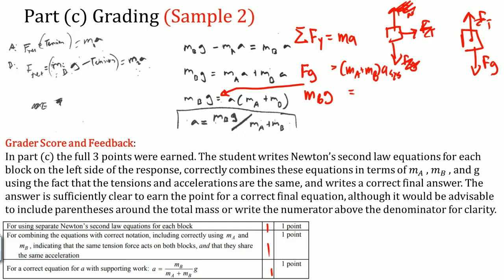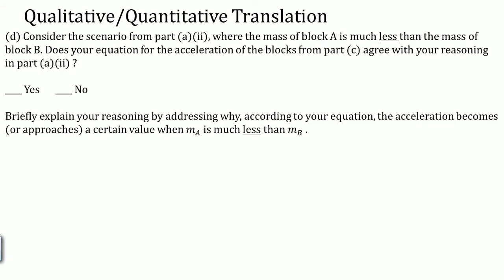Some things to notice about how it's graded: start with an equation, show Newton's second law for each block (that earns a point), show the algebra step, then clearly write the final equation. Make sure the final equation is easy to grade — if it's not clearly there, it won't be credited.